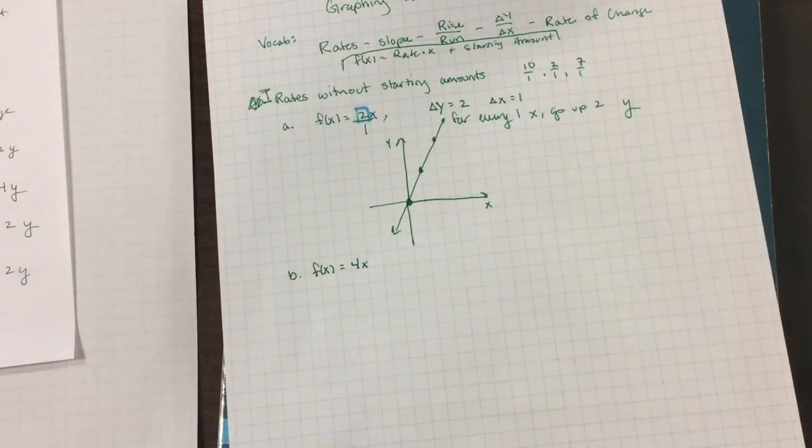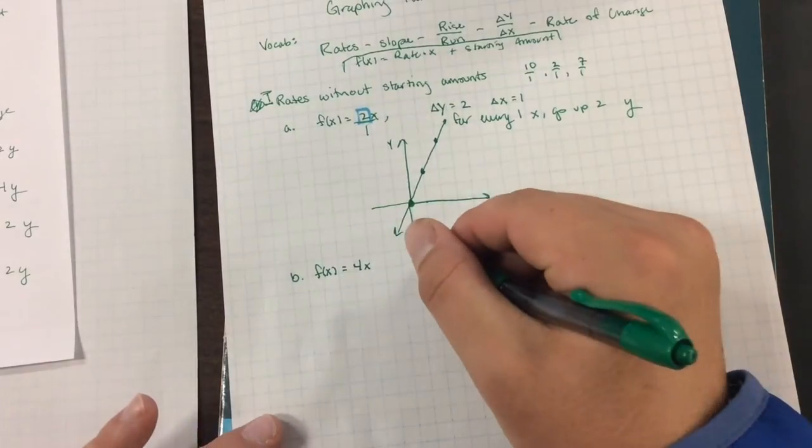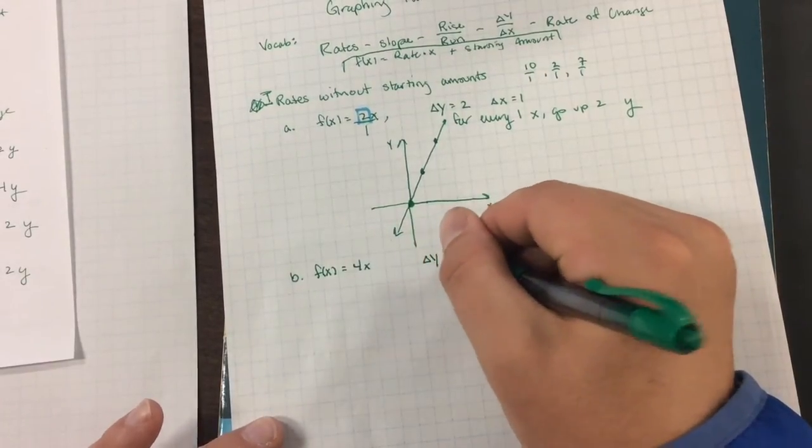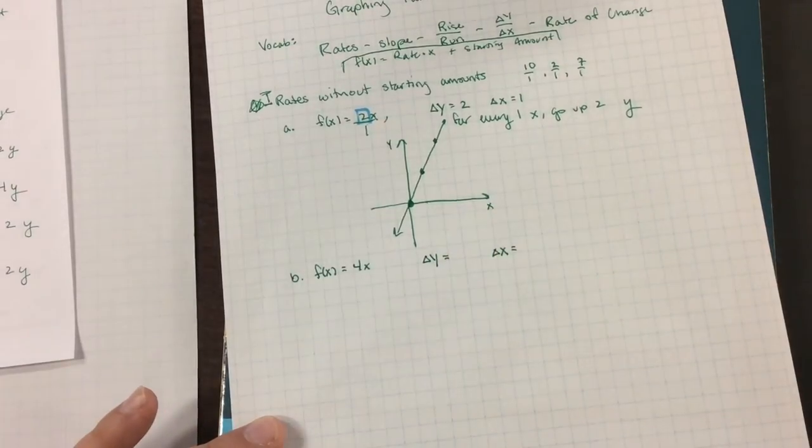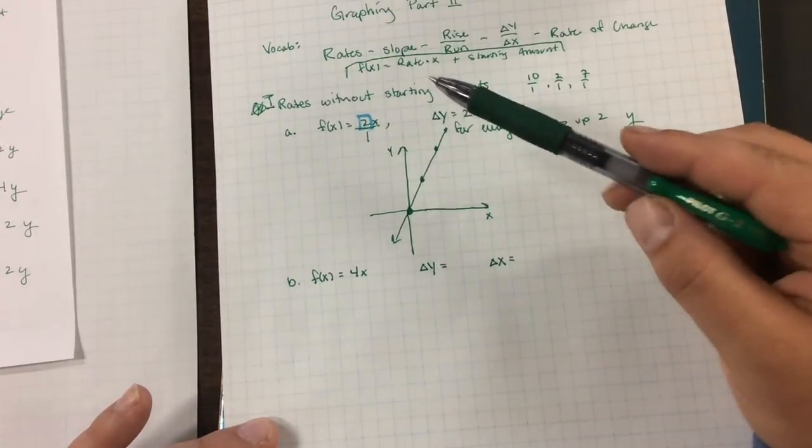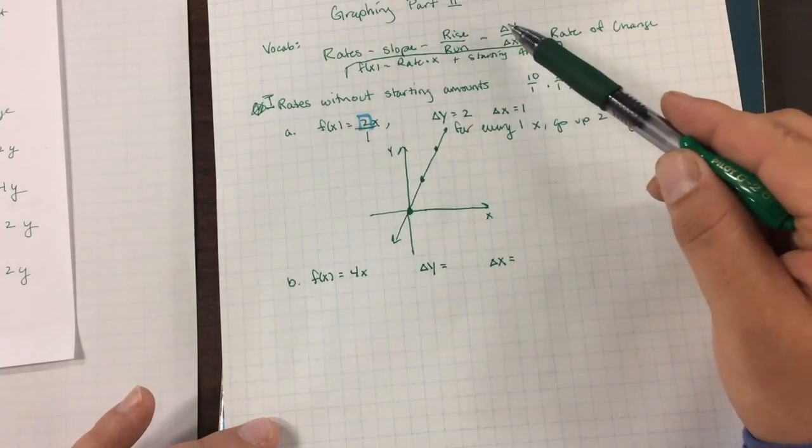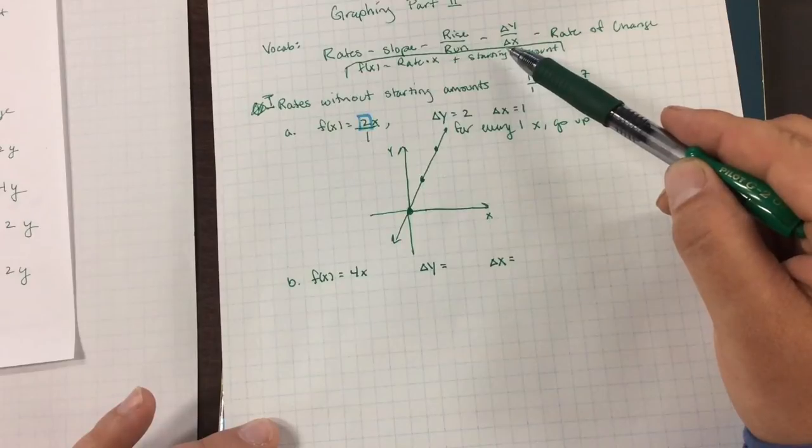Okay, once again, here's another rate. We have f of x equals 4x. What we want to ask ourselves is what is the change in y and what is the change in x? Those are the two questions we want to ask. Rate is always rise over run or change of y over change of x.